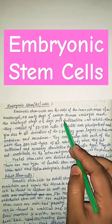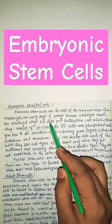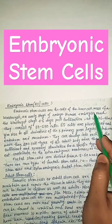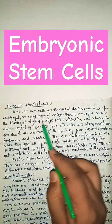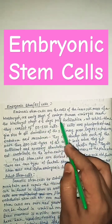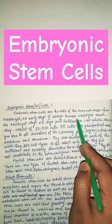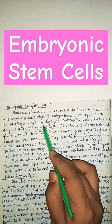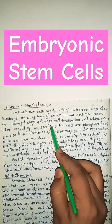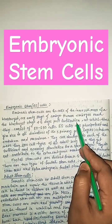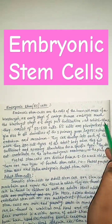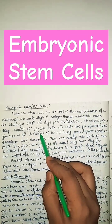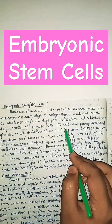What is an embryonic stem cell? Embryonic stem cells are the cells of the inner cell mass of a blastocyst, an early stage of embryo. Human embryos reach the blastocyst stage 4 to 5 days post fertilization, at which time they consist of 50 to 150 cells.